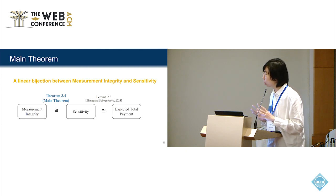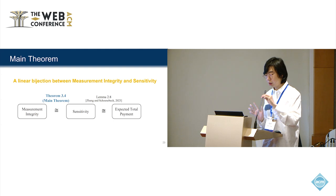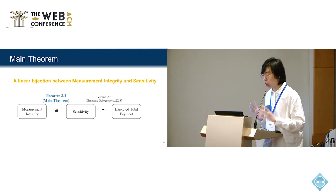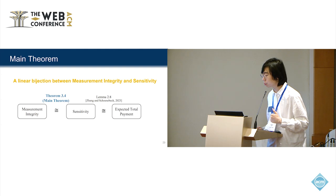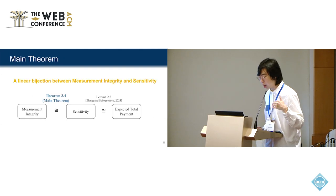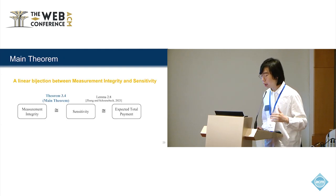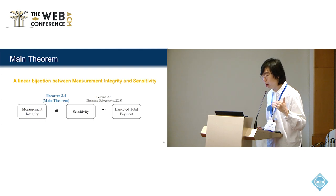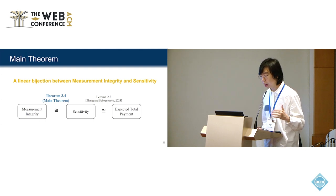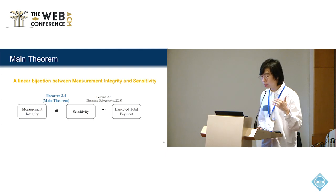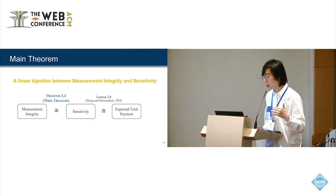This gives us a chance to compute the spot-check equivalence with data. As we expect, if the mechanism has higher measurement integrity, it will have lower expected total payment. Similarly, if it has higher sensitivity, we will expect it has lower expected total payment.